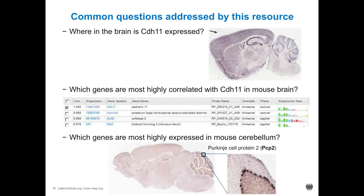This resource is commonly used to look for a particular gene of interest. For example, CDH11 is expressed across a lot of the brain, including neocortex and hippocampus. You can also ask which genes are most highly correlated with a particular gene of interest. And you can ask which genes are most highly expressed in a particular area — for example, in mouse cerebellum, Purkinje cell protein 2 is very highly expressed in just the Purkinje cells of the cerebellum, but with very low expression anywhere else in the brain.